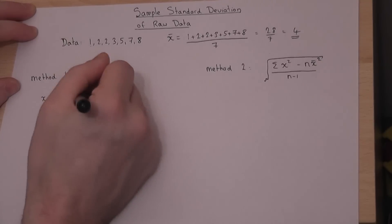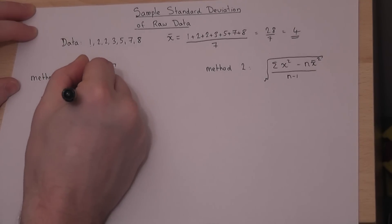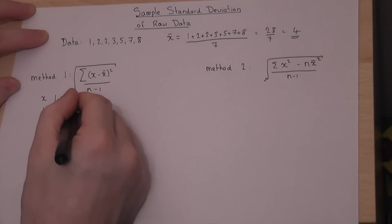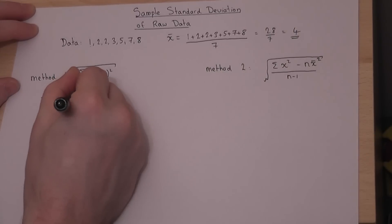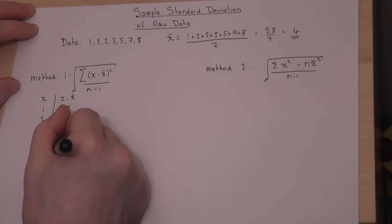I will find out what the data minus the mean is. So I will subtract the mean from each of the data values, so take away 4. So 1 take 4 is minus 3, minus 2, minus 2, minus 1, 1, 3, and 4.